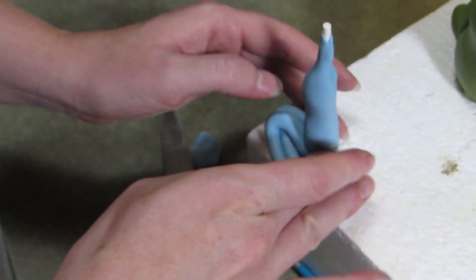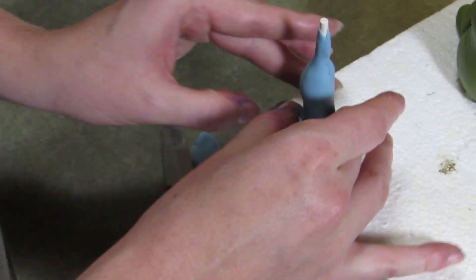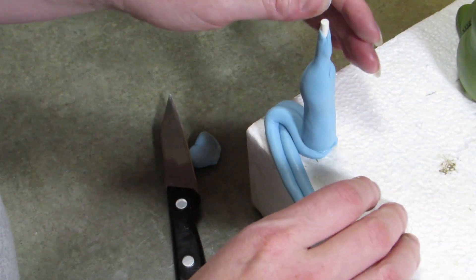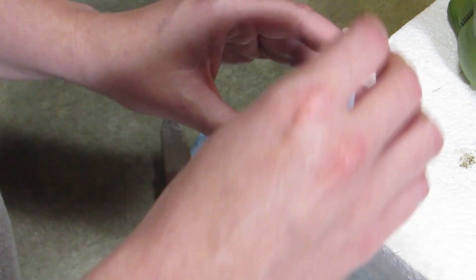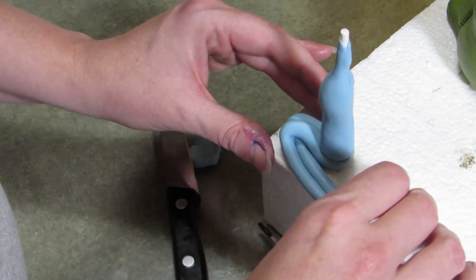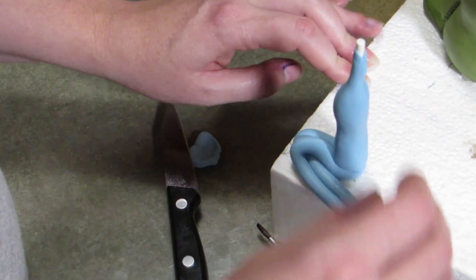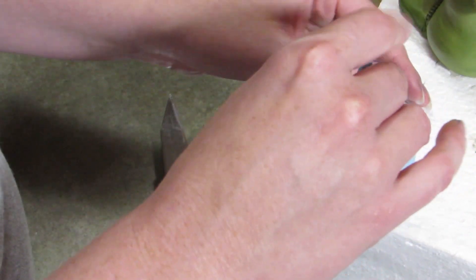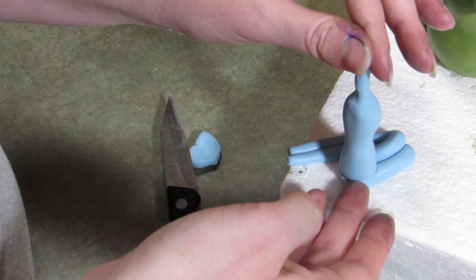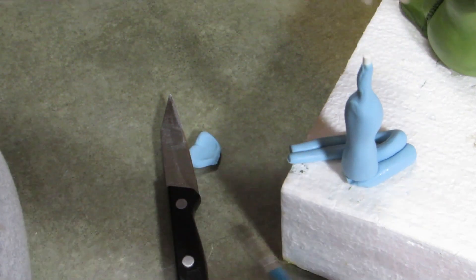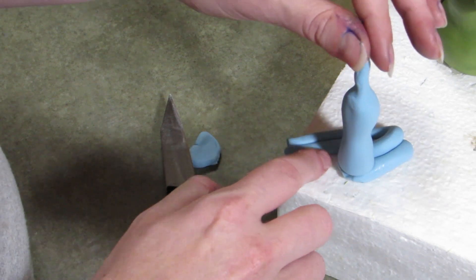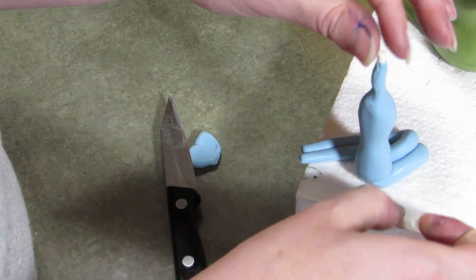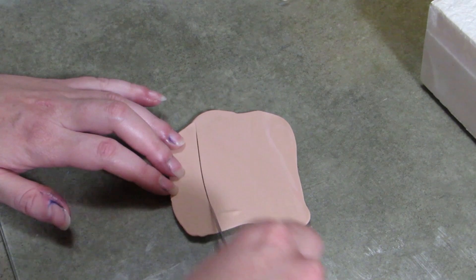You trim off the bottom of them because we're going to add shoes later. And there she has her hips, her thighs and her calves. When you bend them at the knee, I'm bending her so she's kind of sitting with her legs sticking out to the side, not quite crisscross applesauce, but you want to pinch the knees off a little bit so they're not rounded. They are a little bit more sharp.